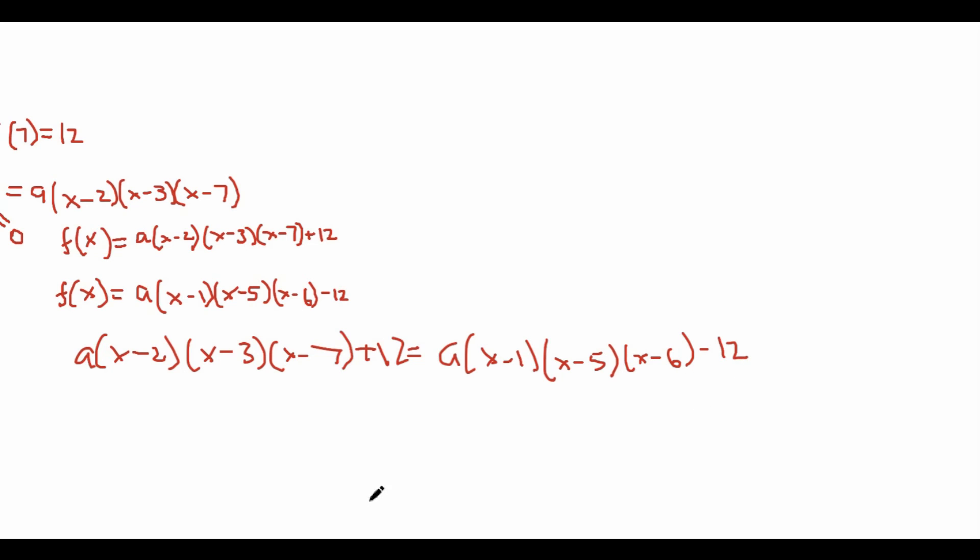And to simplify our calculations here, let's just plug in x = 0. And what does this give? Well, this is negative 2, this is negative 3, this is negative 7, this is negative 1, this is negative 5, this is negative 6.